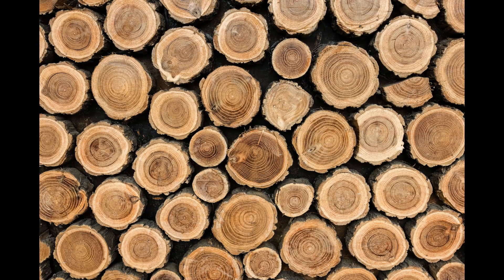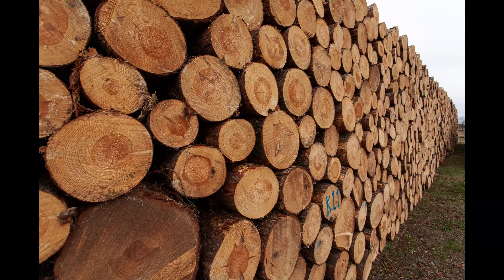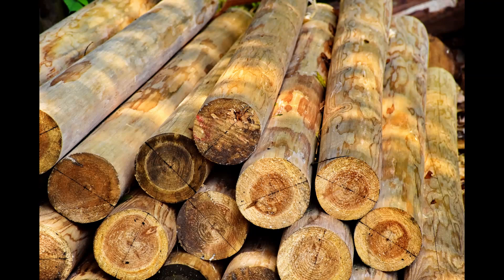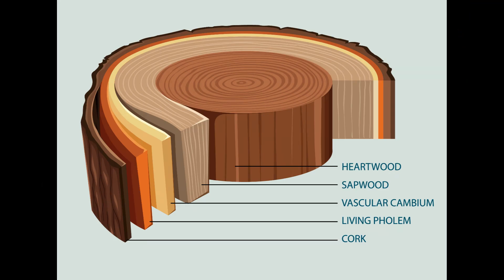Importing Wood and Timber Products to the UK. The UK is a major importer of wood and timber products, with a total import value of £2.7 billion in 2021. The most common types of wood imported into the UK are softwoods, such as pine and spruce, hardwoods, such as oak and mahogany, and plywood.